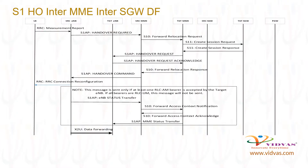Let us go over LTE Inter MME Inter SGW S1 handover, direct forward and call flow. Assume UE is attached in the LTE network. There is no indirect data forwarding tunnel between source ENB and SGW in this call flow. UE sends an RRC measurement report to ENB. Based on the signal strength received in the measurement report, source ENB decides to hand over the UE to target ENB. Assume X2 connection is not available from source ENB to target ENB; X2U channel may optionally be available.